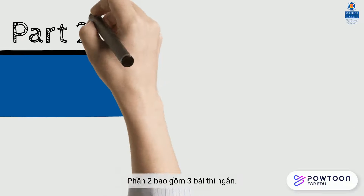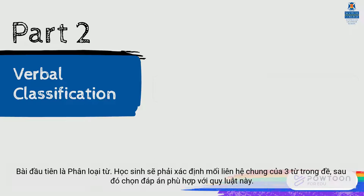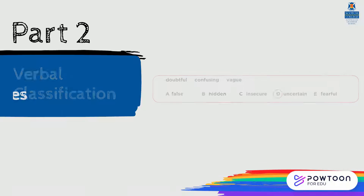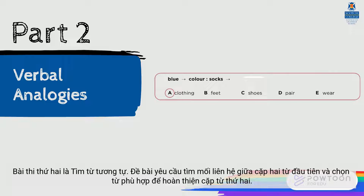Part 2 consists of three short tests. The first test is Verbal Classification — you will identify the conceptual link between three words, and then select one answer which best fits the first three. The second test is Verbal Analogies — you will work out how the first pair of words is related to each other, and then select one answer that completes the second pair.